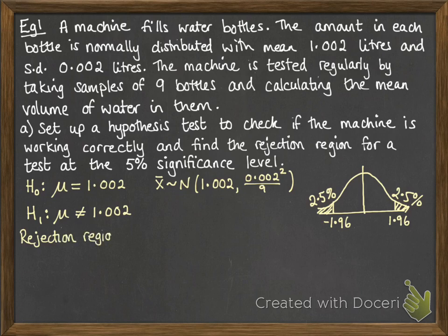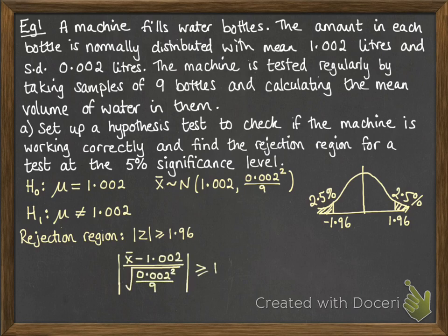So our rejection region will happen when the modulus of z is greater than or equal to 1.96. So then if we standardize our test statistic and then rearrange, that tells us that x̄ has to be above 1.0033 or below 1.0007 for us to reject the null hypothesis.